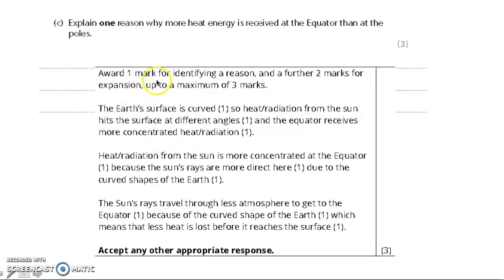So you get one mark for identifying a reason and a further two marks for the expansion. So the earth's surface is curved. This is your point. This is your first point that you get marked. So there's your connective. Here's the explanation. Heat radiation from the sun hits the surface at different angles. There's your mark. And the equator receives more. So again, we're extending it. We're developing it. So this is where you get the third mark there. Again, more concentrated because, due to. So again, we're showing those connectives to show those extra links in here. Again, sun's rays travel through less atmosphere at the equator. There's your point, because, which means that, look at the connectives. That's so important.